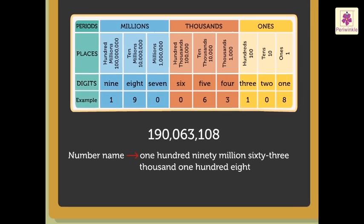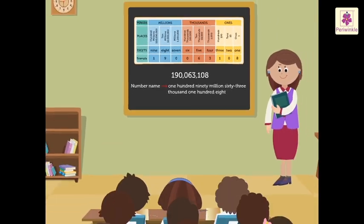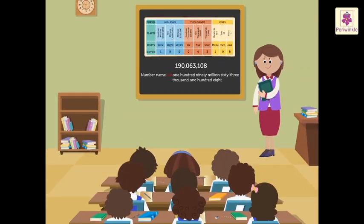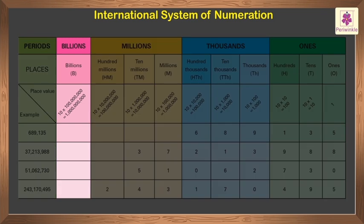It was easy to learn more about the number system! Till now we have learned to handle numbers up to nine digits. Now we will deal with numbers up to ten digits, so we need to know that there is one more period just after the millions: the billions period.